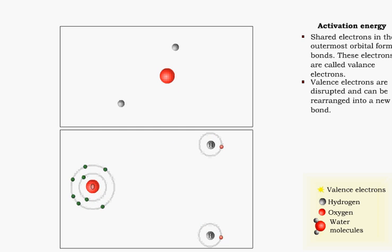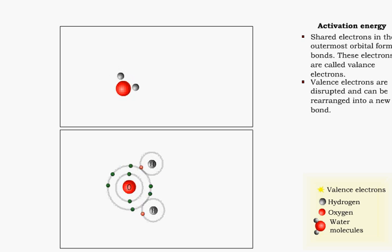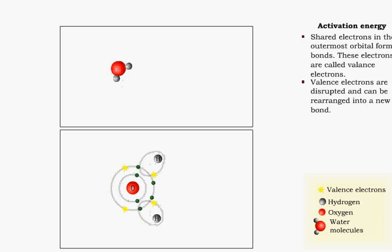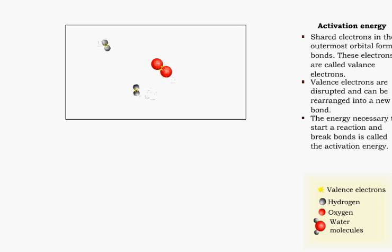If collisions between the hydrogen and oxygen molecules are forceful enough, the valence electrons will be disrupted and a new bond will form. Additional energy, called the activation energy, must be absorbed by the reactants in order to break their bonds and start a chemical reaction.